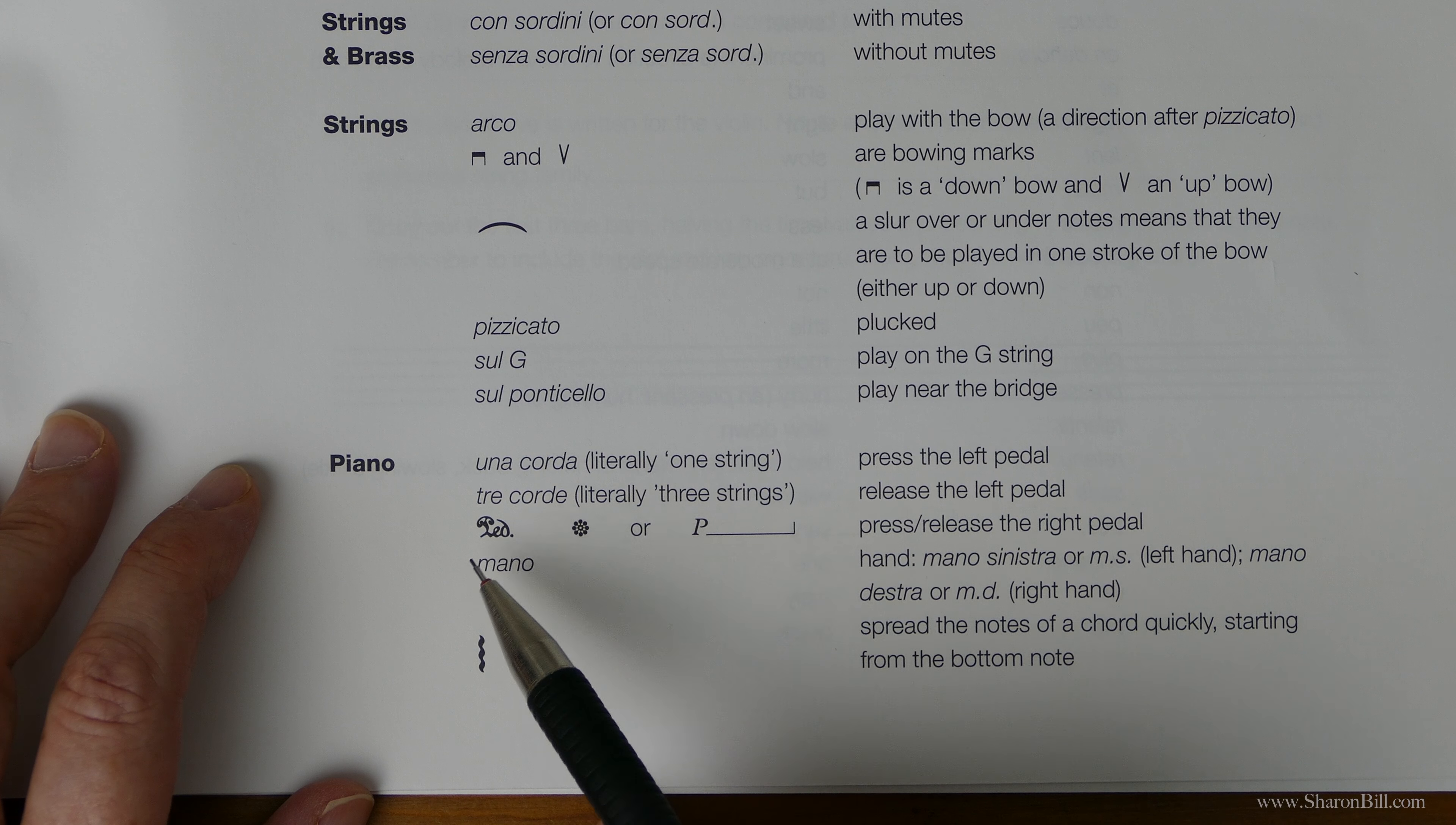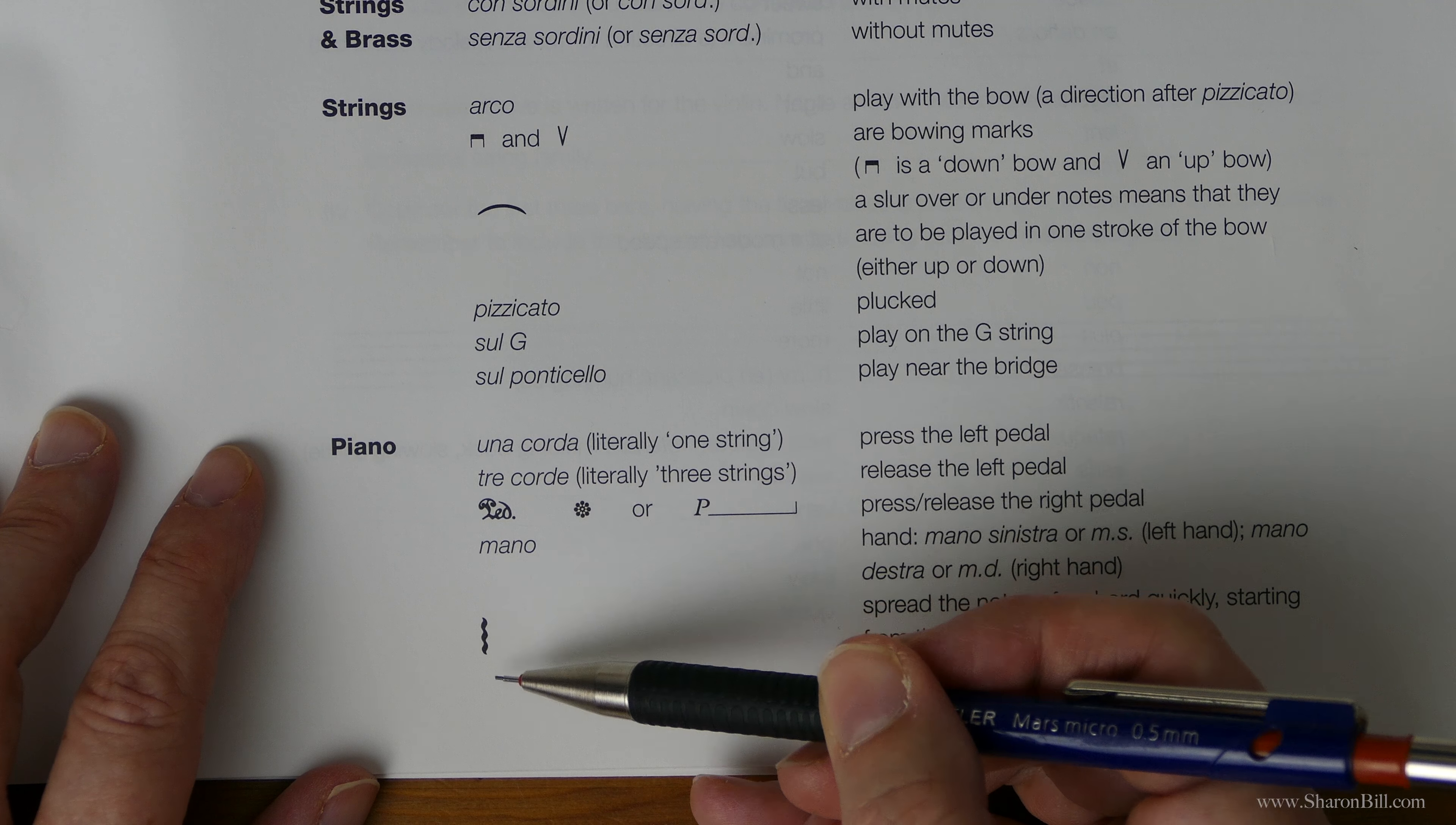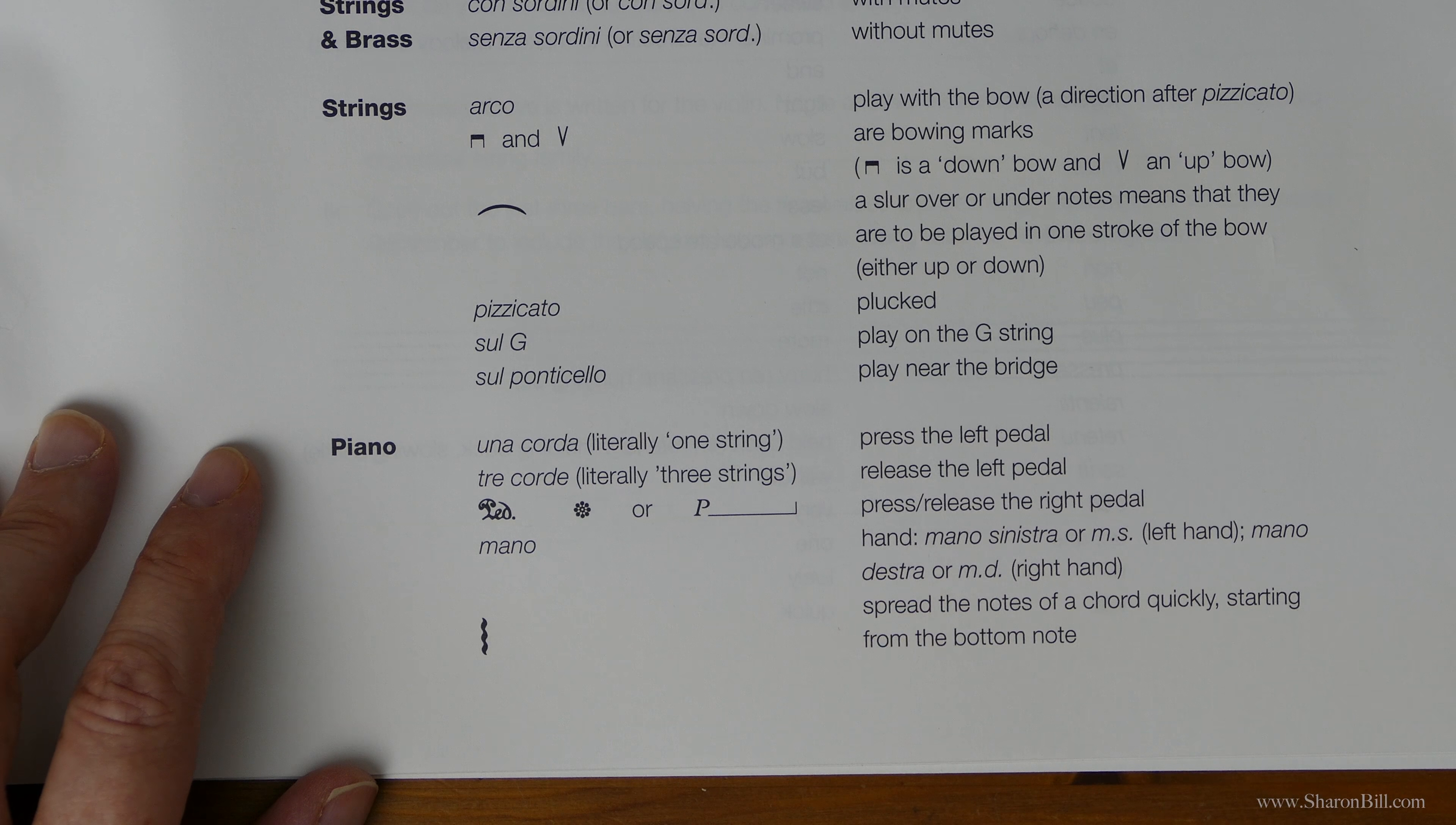We've got pedaling directions which can be written on the music telling us to lift the pedal up or depress the pedal. Sometimes we've even got signs telling us which hand to use because sometimes we can be crossing hands. Then we've got this arpeggiated sign where we build up a chord gradually. It sort of gives the effect of a harp glissando as we arpeggiate the chords.